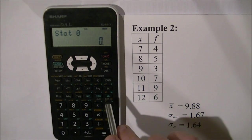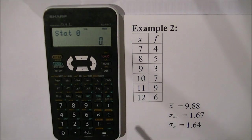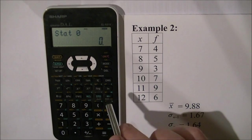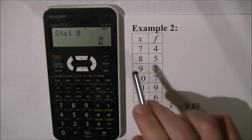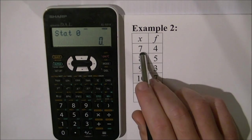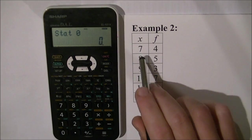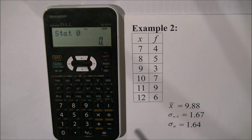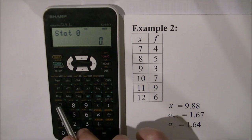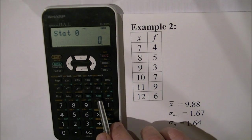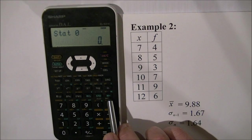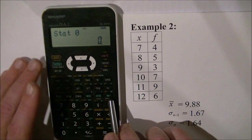Now I could press 7 and then the M plus button 4 times and the 8 and the M plus button 5 times, but really what I want to do is shorten my work. I'm going to show you how to enter a table like this into your calculator. The buttons I'll need are the numbers, the STO key, and the M plus key.